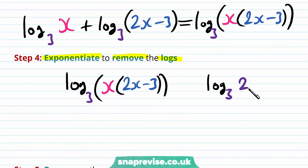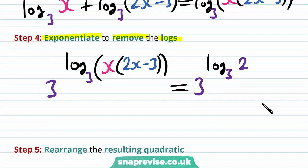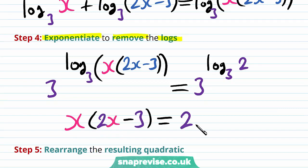So we can exponentiate both sides, i.e. take 3 to the power of both sides, and therefore they'll be equal. This will remove both the powers and the logs. And so we're going to have x multiplied by 2x minus 3 is equal to 2.